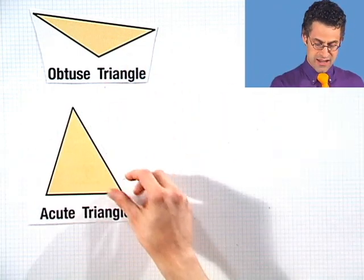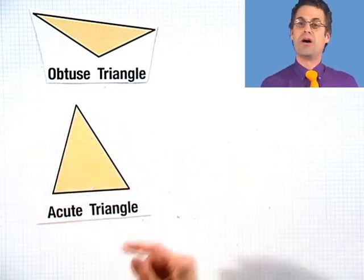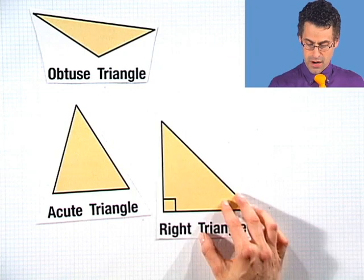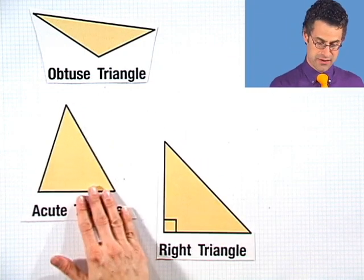An acute triangle, oh, it's so acute! That's when all the angles are small, meaning they're all less than 90 degrees. A right triangle is a triangle where you have an angle of exactly 90 degrees.